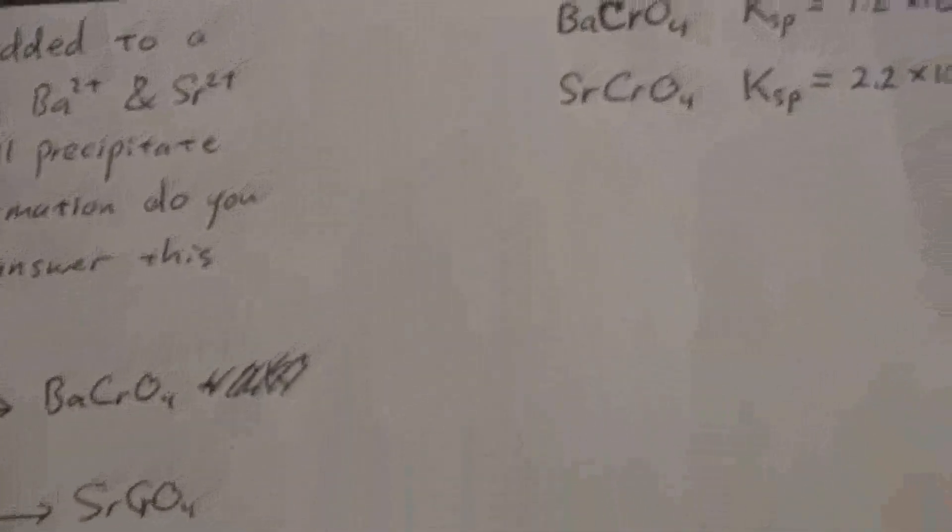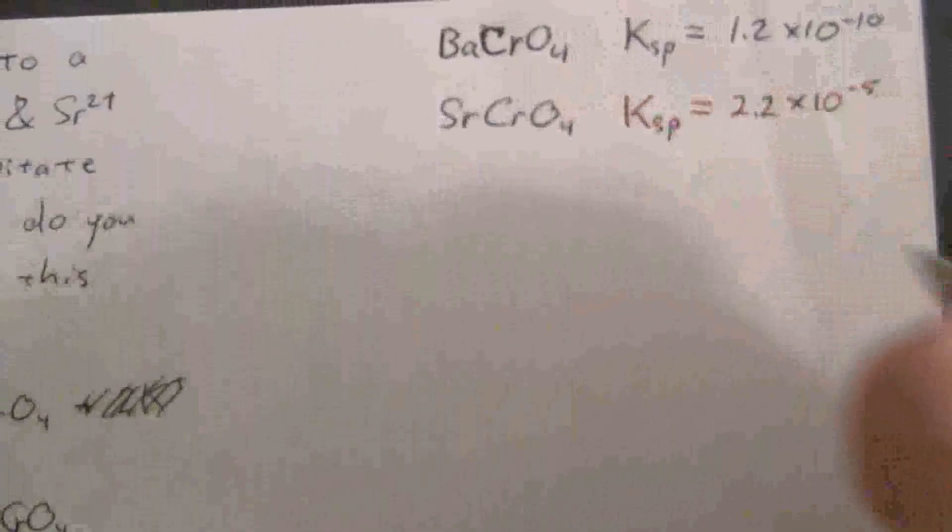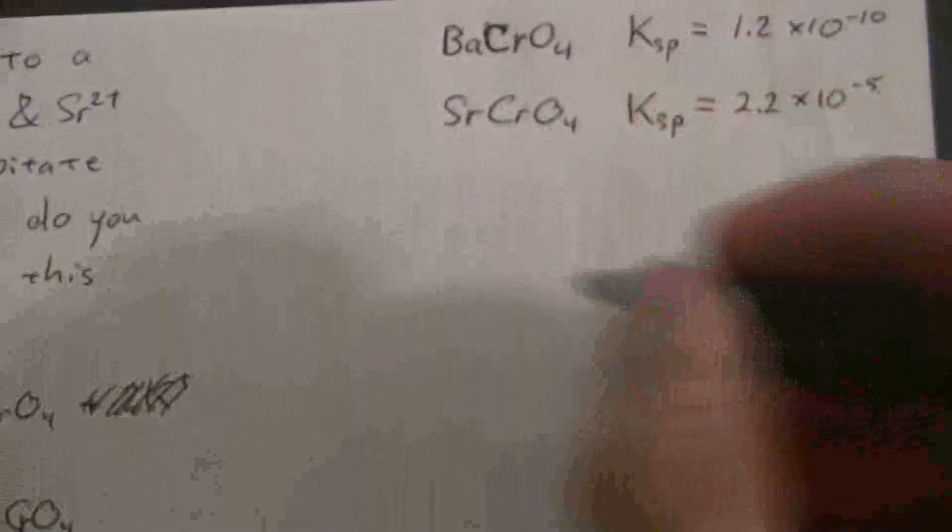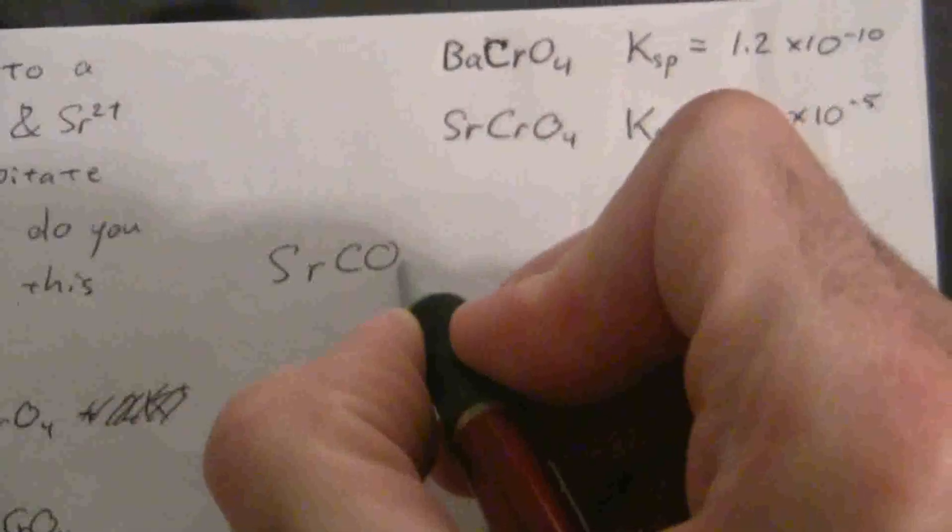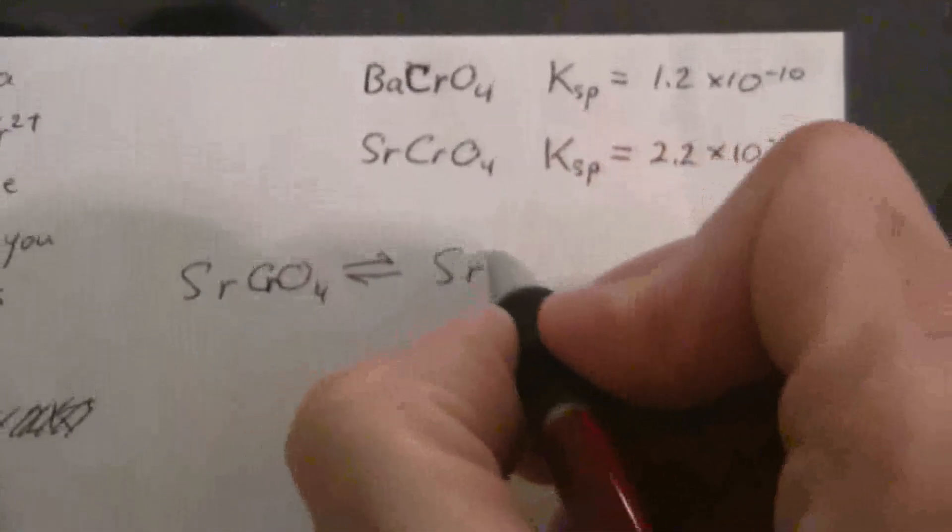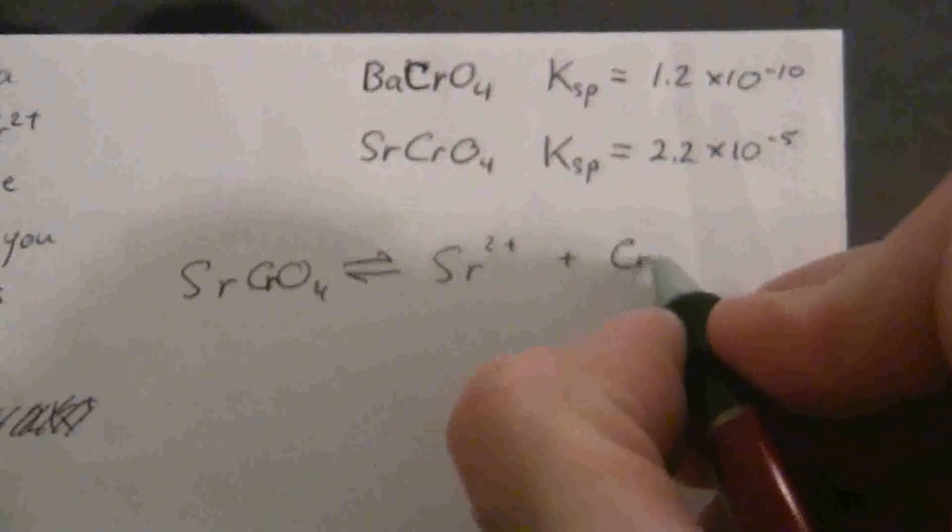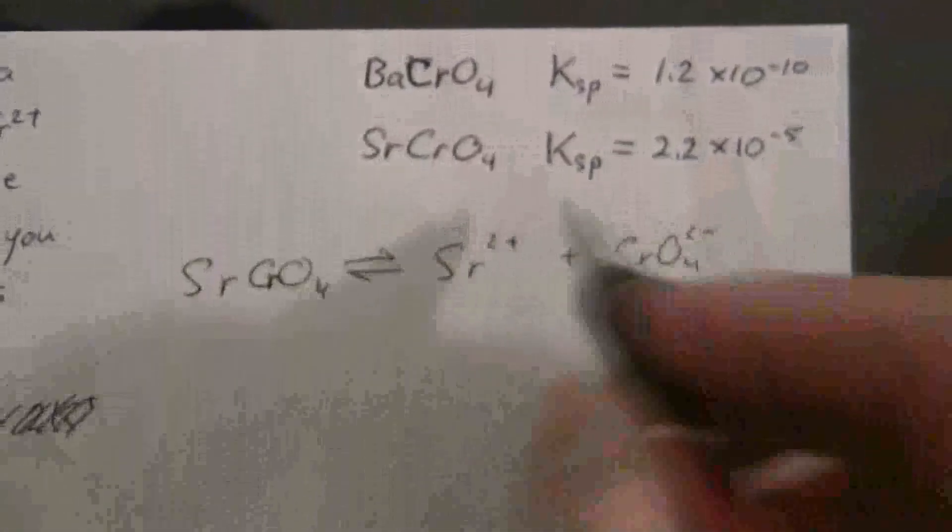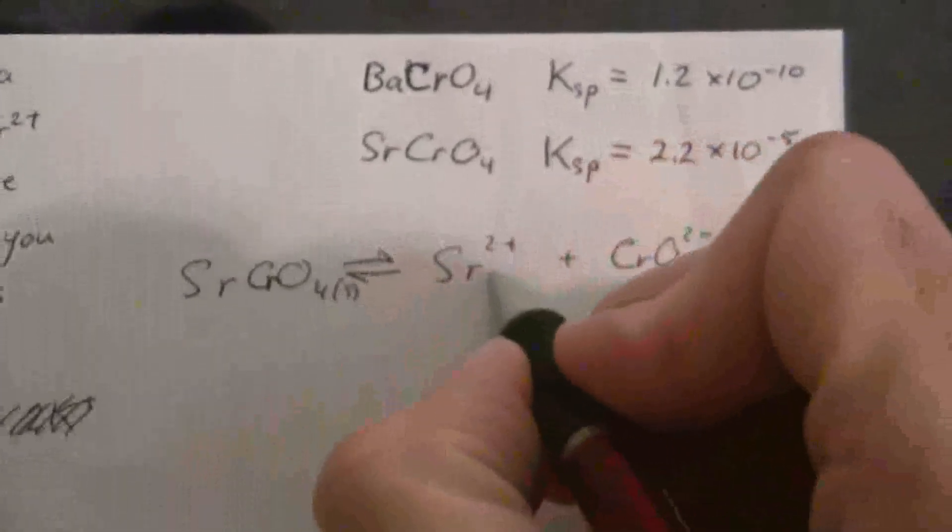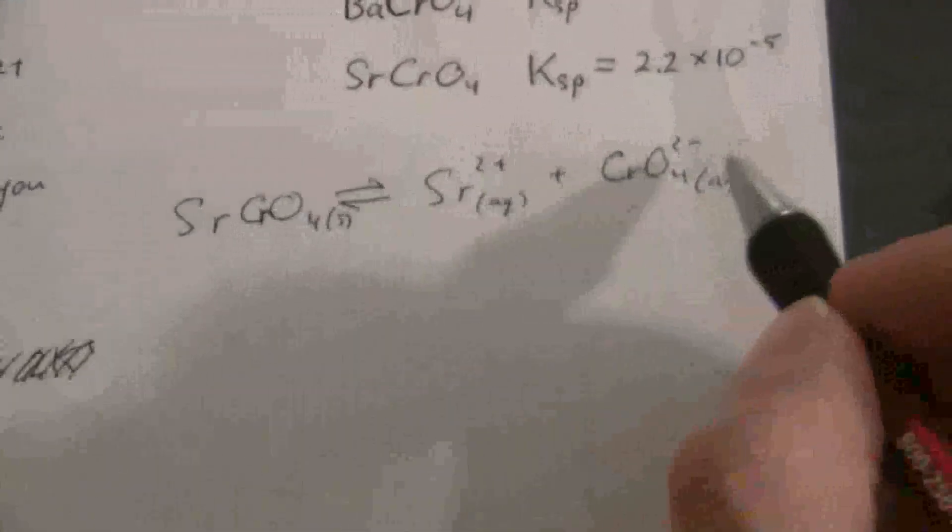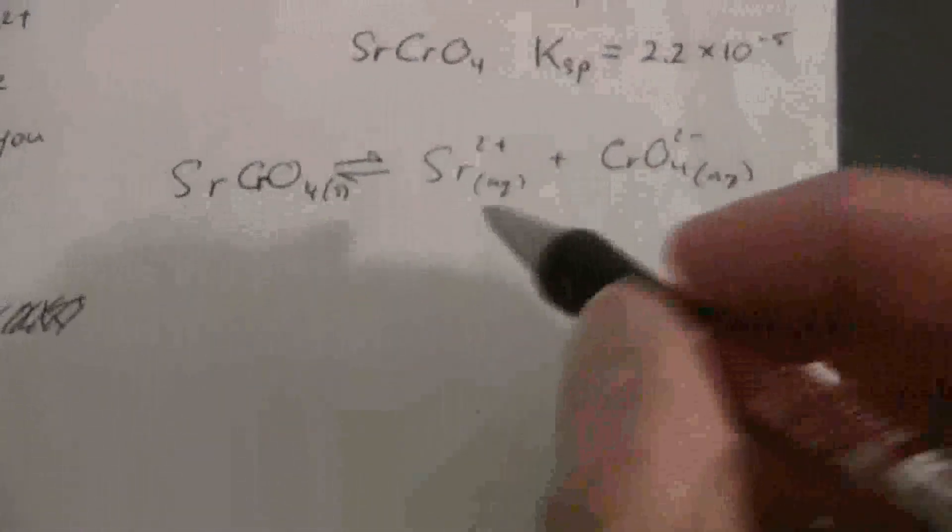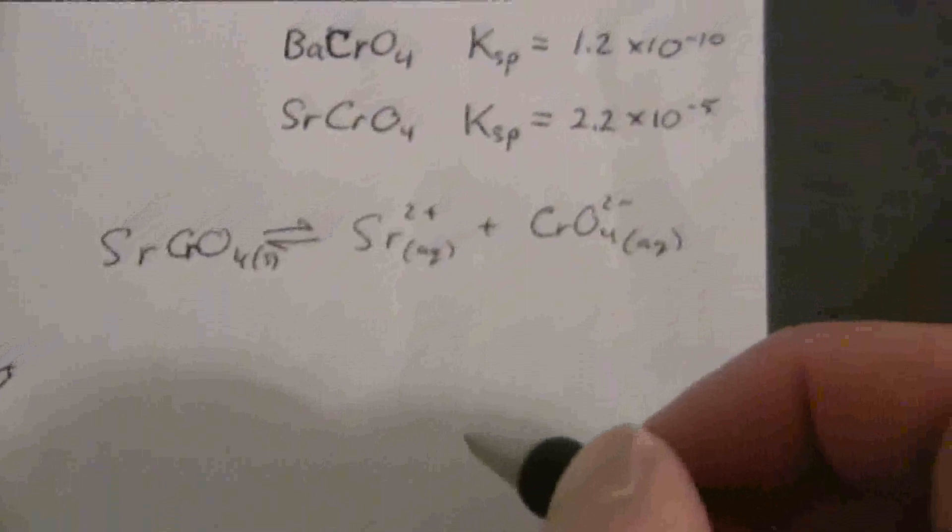So what I'd like to do is just run through a little example where it illustrates that. So here is our CrO₄ dissociation equation for the salt. Of course, these are aqueous ions, and this is solid. So the solid won't show up in our K constant for this equation. That's why it's called the solubility product.